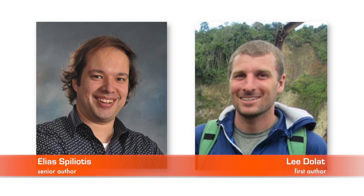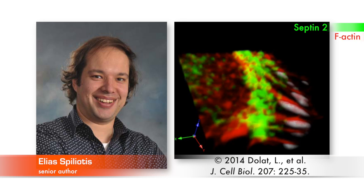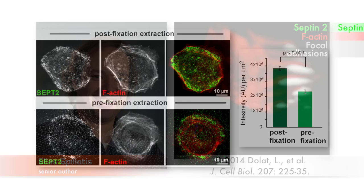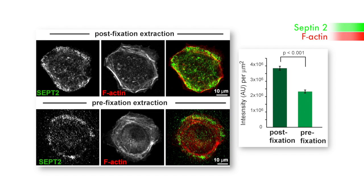However, we had observed that a subset of those septin elements was not completely colocalising with actin filaments, and we speculated that perhaps there is a membrane component. So to test this, we thought to pre-extract the cells with mild detergent before fixing them, and what we found was that there was an overall decrease in the presence of septins at the lamella, which suggested that they're bound to membranes.